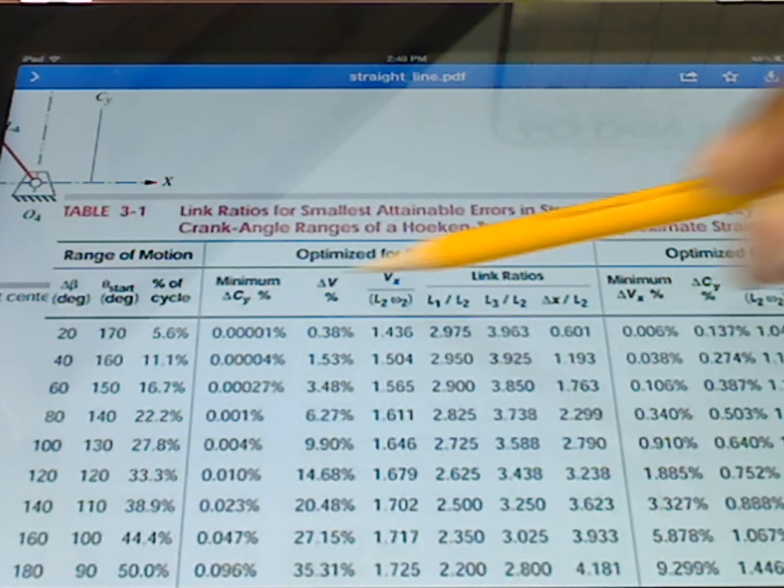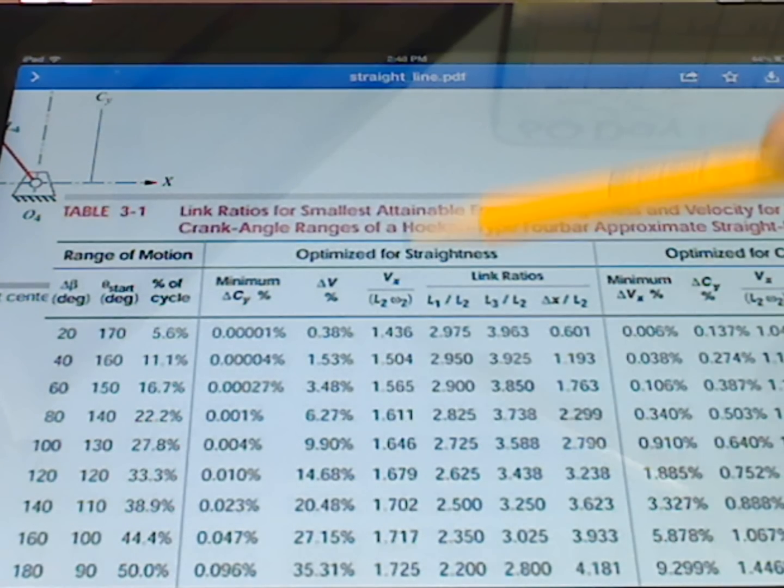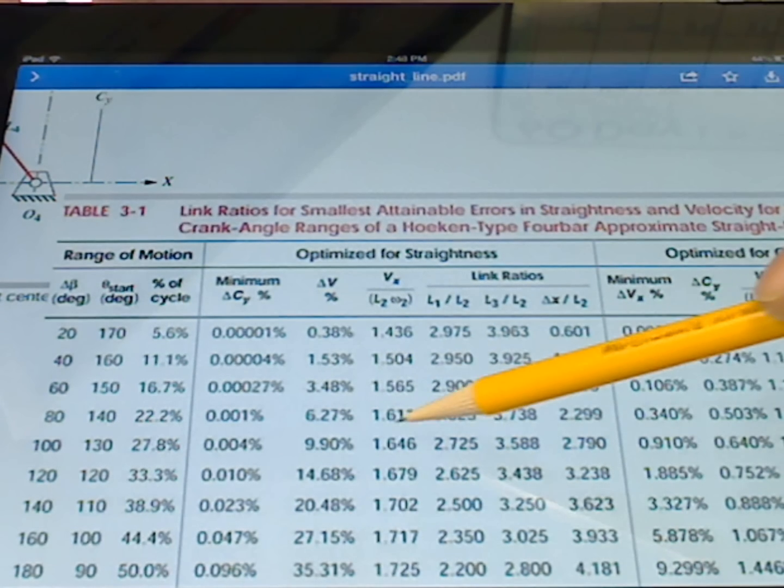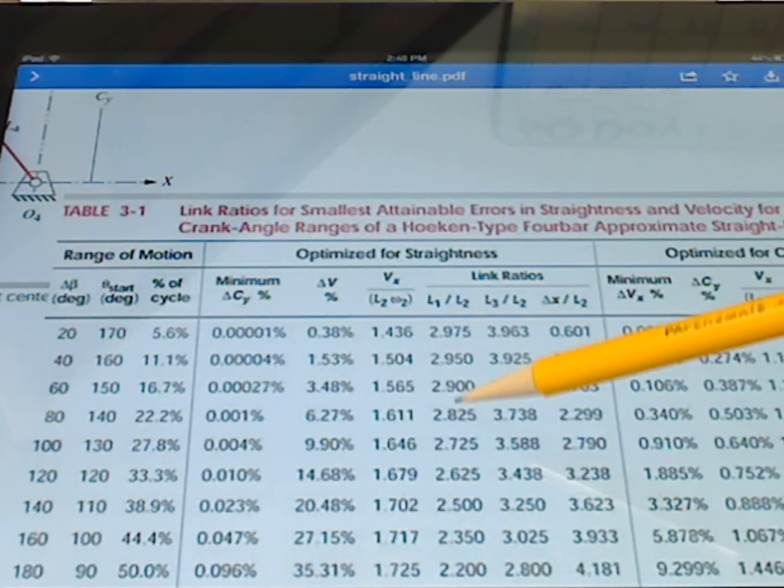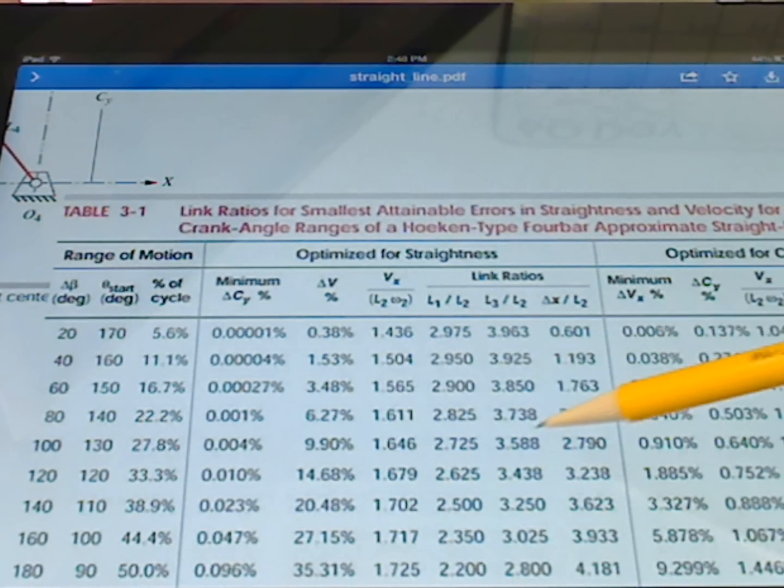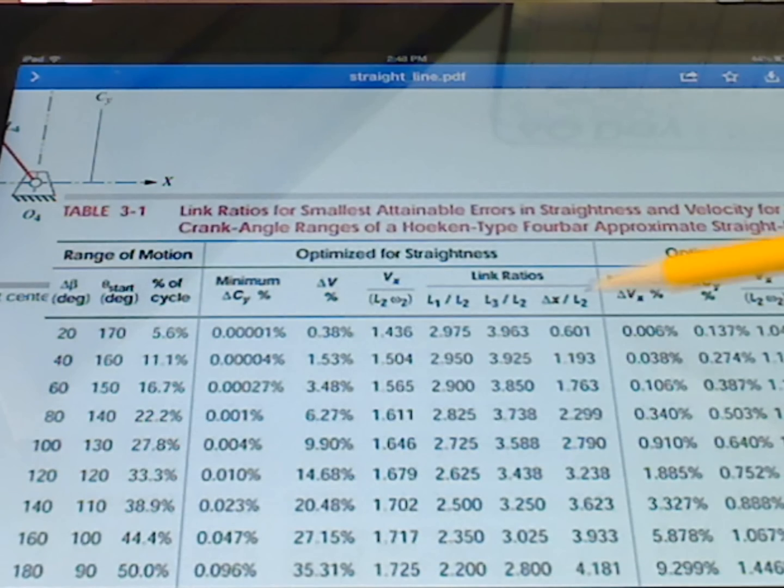then if we're going to optimize for straightness, so we want a line that's very straight, we need a 1.611. I'm sorry, I should be here. We want a 2.82 L1 over L2, 3.73 L3 over L2, and 2.29 for delta x over L2.